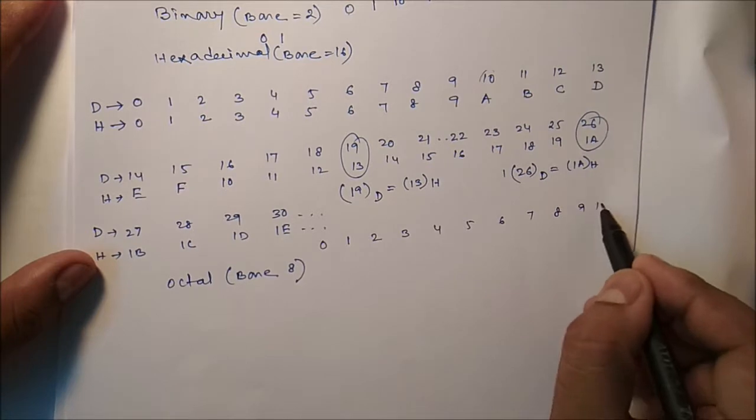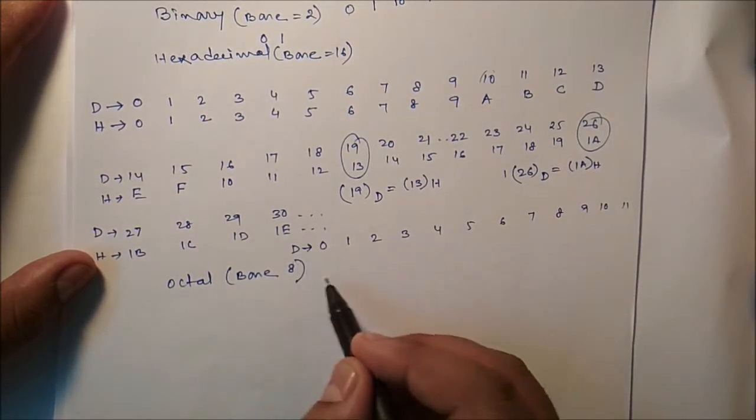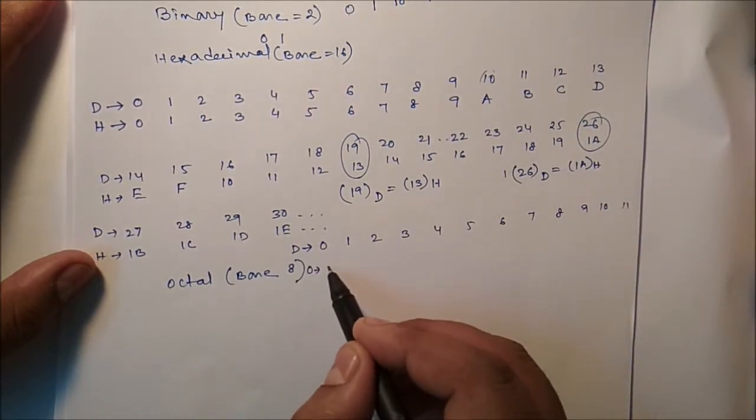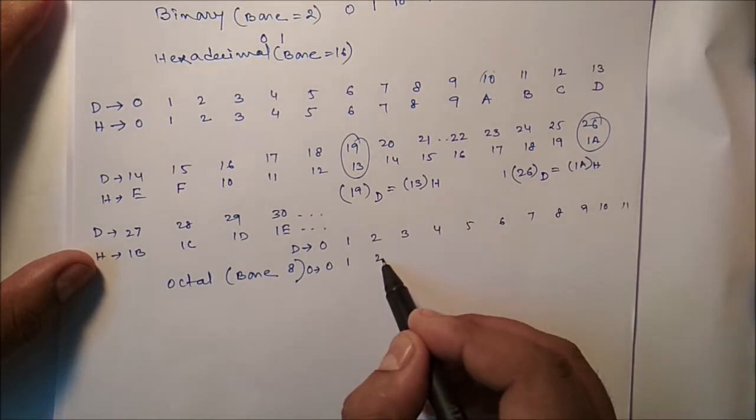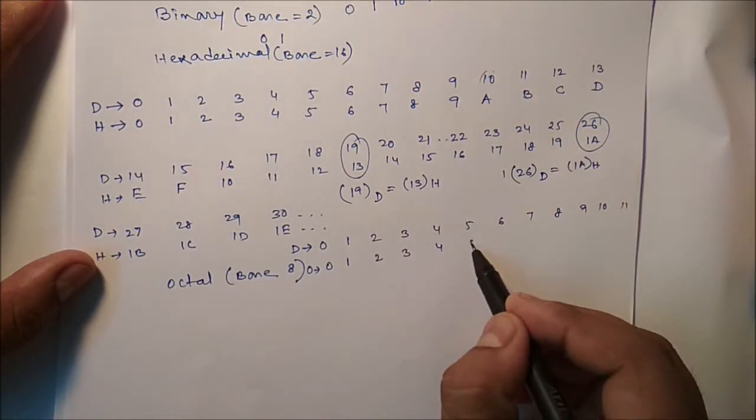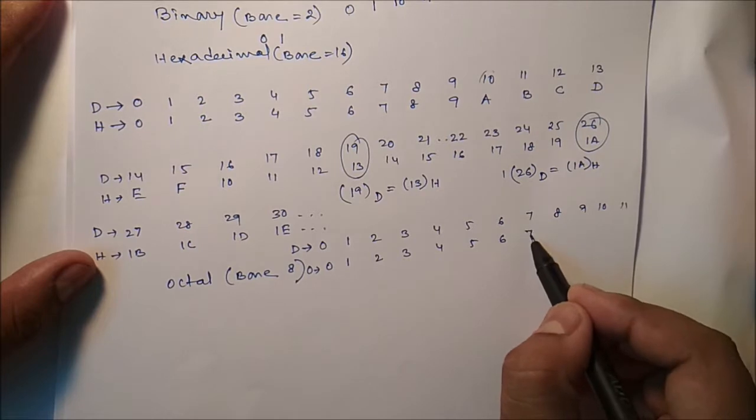8, 9, 10, 11 and so on. So if this is decimal, what will be the corresponding octal? 0, 1, 2, 3, 4, 5, 6, 7.